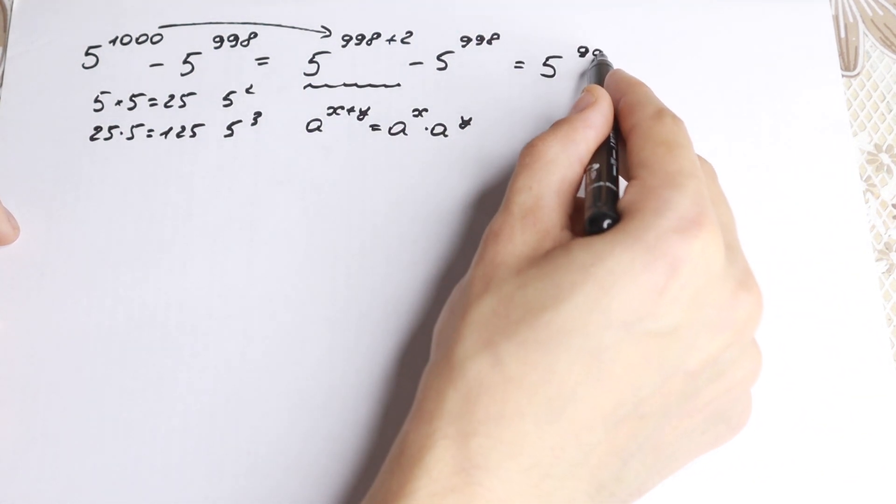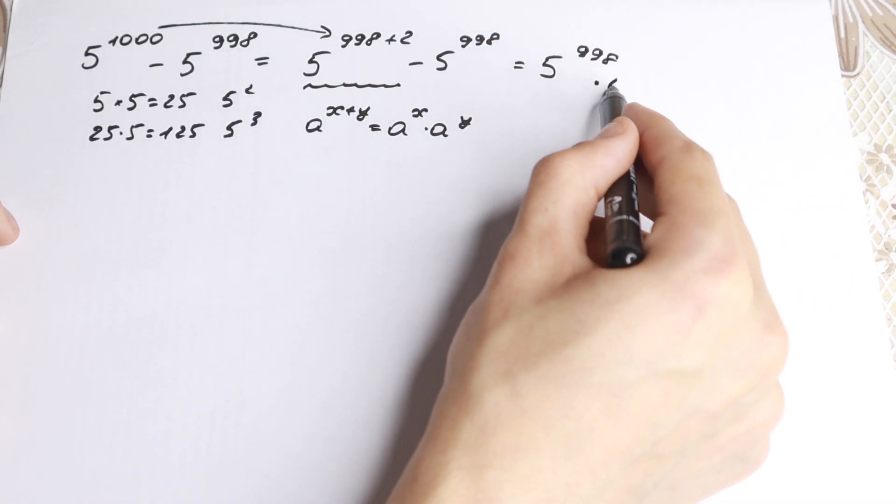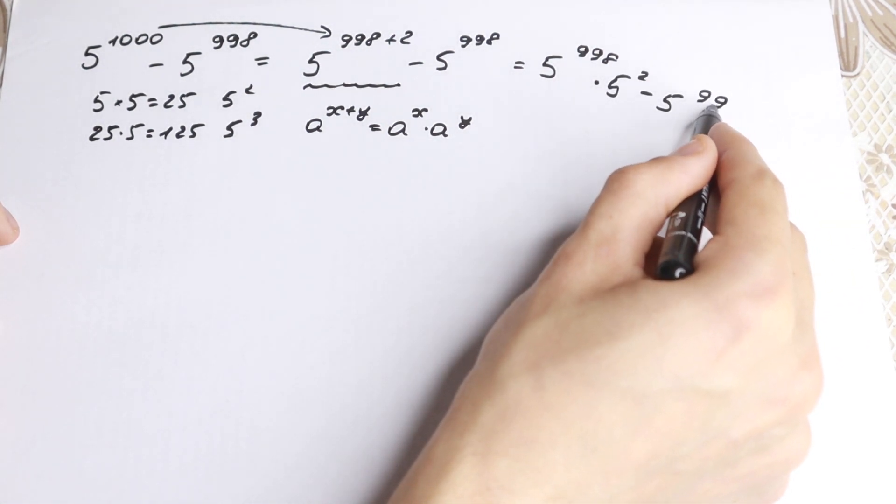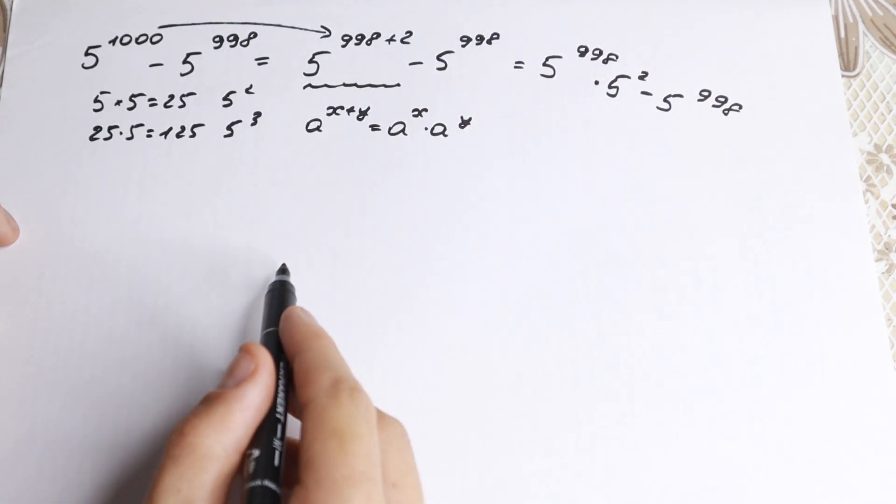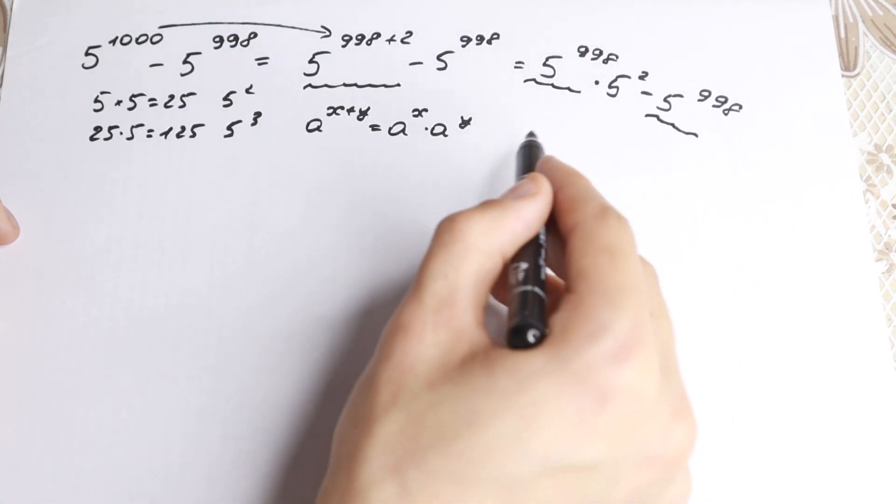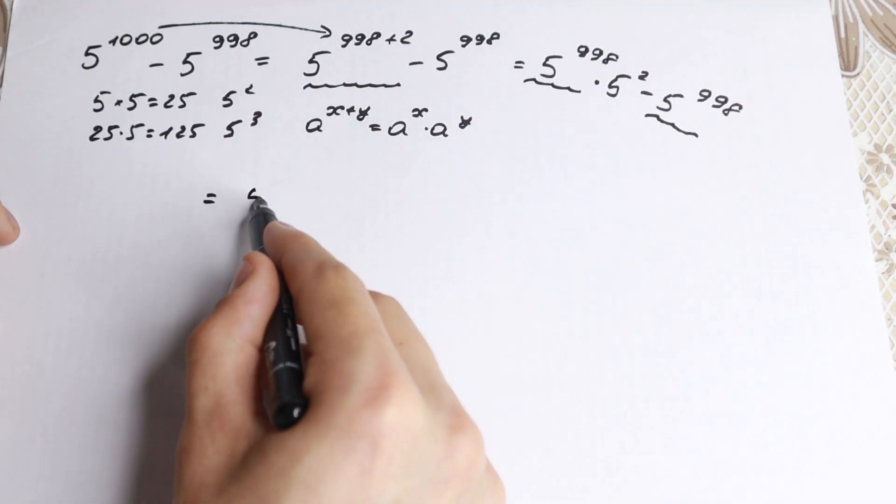5 to the power 998 times 5 squared, minus 5 to the power 998. If you look closely, we have the same elements here and here, so we can factor it.